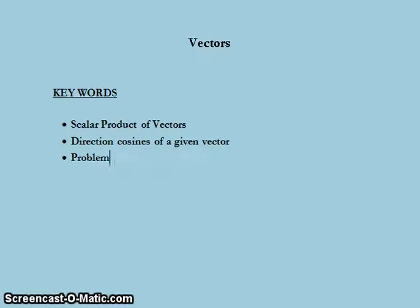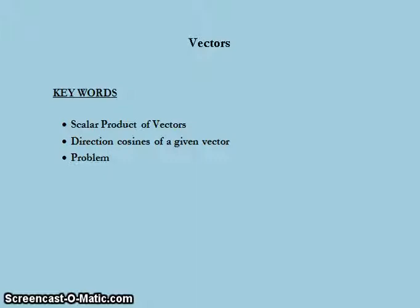Hello and welcome to another lecture on vectors. Thus far we have studied about scalars and vectors and types of vectors. Today we shall be discussing the scalar product of vectors and their properties. Later we will deal with direction cosines of a given vector, and finally we shall conclude this lecture by discussing some numerical problems based on evaluating the scalar product and direction cosines of a given vector.